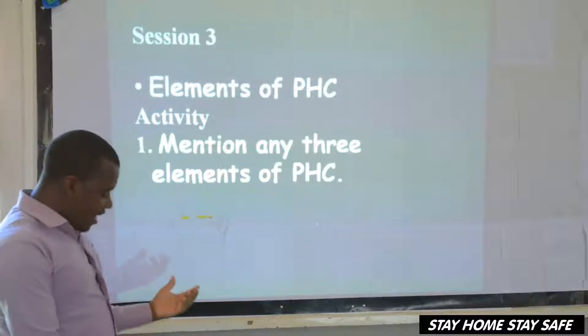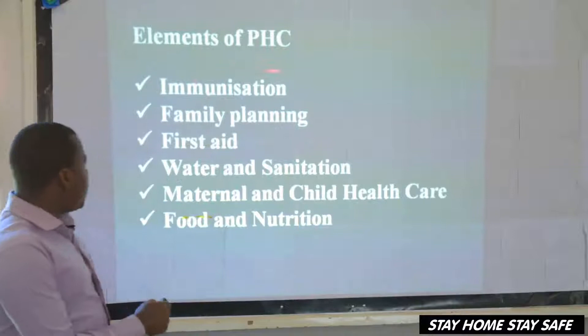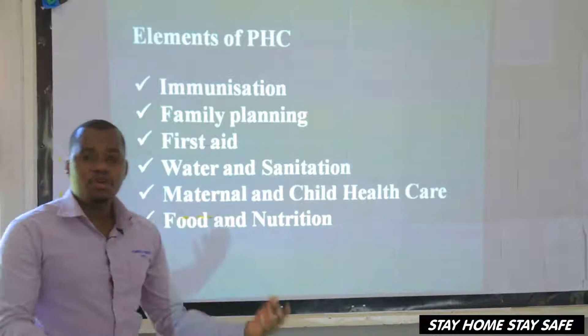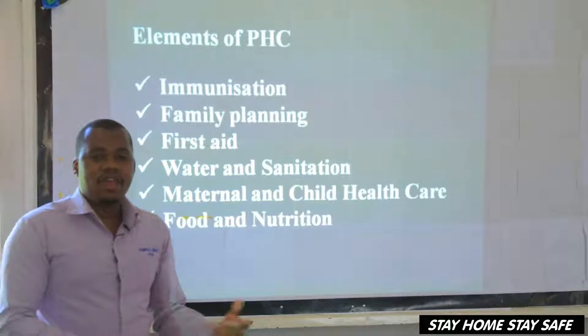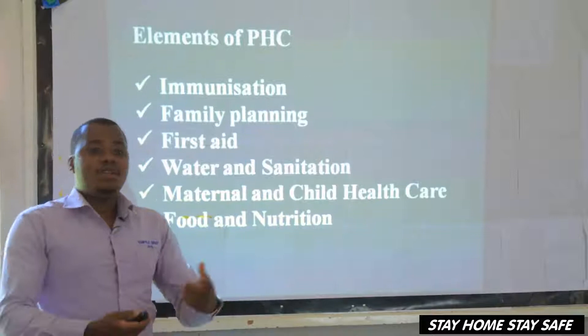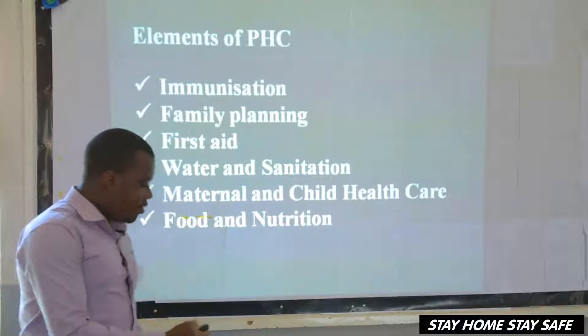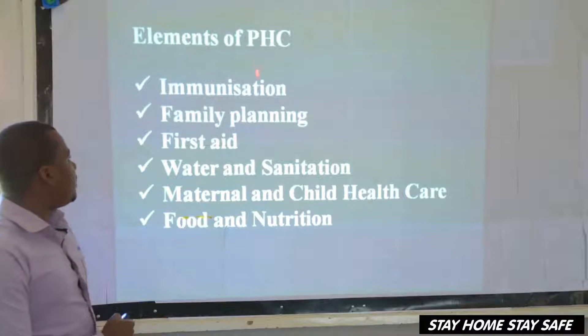What are these elements of primary health care? These are things that show you that there is PHC in an area. Element one: immunization. Can we say immunization? Can we spell it? I-M-M-U-N-I-S-A-T-I-O-N. Then we have family planning. Can we spell family planning? F-A-M-I-L-Y P-L-A-N-N-I-N-G.